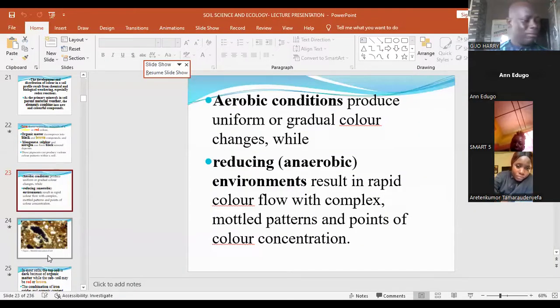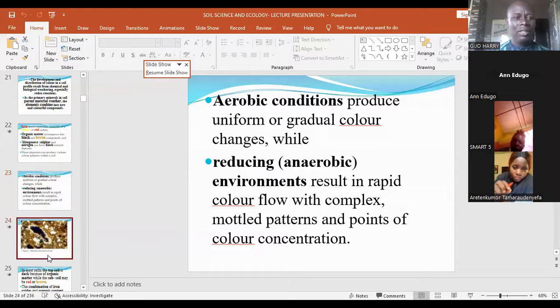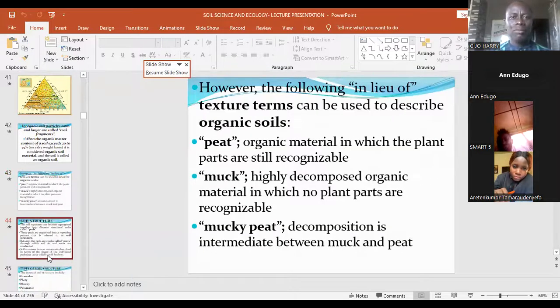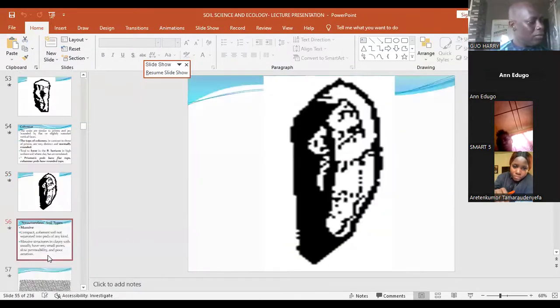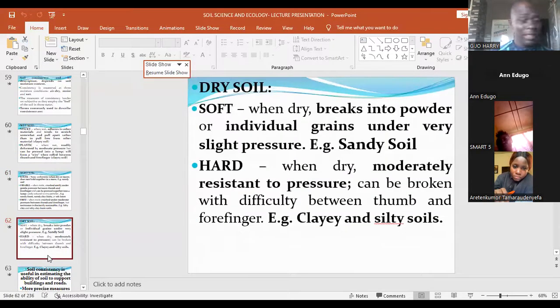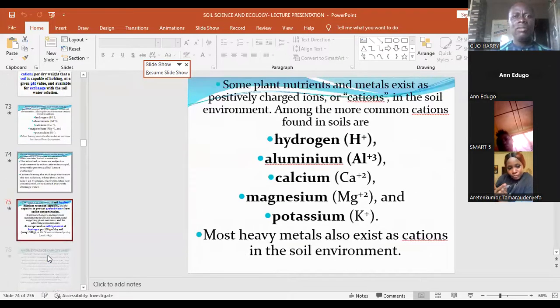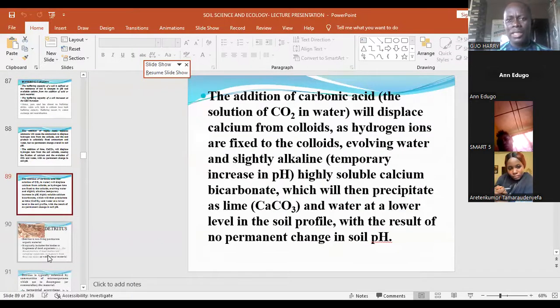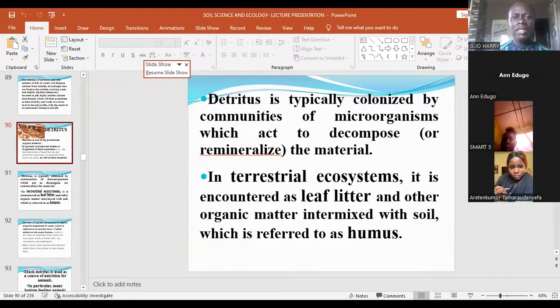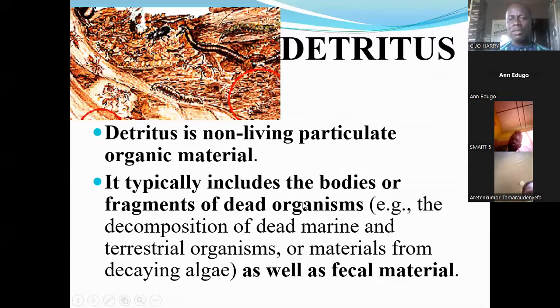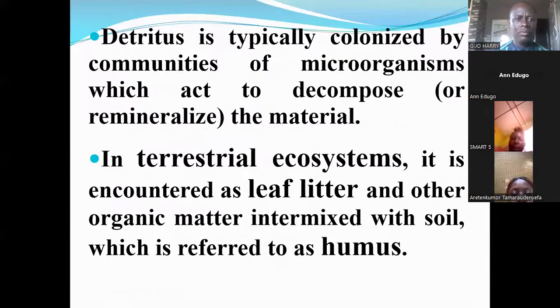Such decomposing organic matter is referred to as detritus. Microorganisms like bacteria and fungi are responsible for the breakdown of detritus. Detritus is very important in the ecosystem because it forms a very important source of nutrients to living organisms.